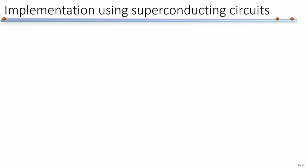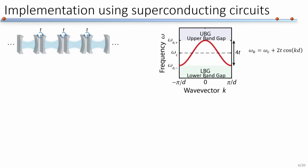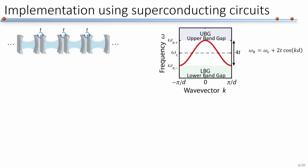We implement these ideas with superconducting circuits. We choose to implement our waveguide with a 1D coupled cavity array model with nearest-neighbor coupling. This tight-binding model has a cosine-shaped dispersion with two band gaps — the lower and upper band gaps. To implement this with superconducting circuits, we use a capacitively coupled LC resonator array. On top of that, we couple our transmon qubits onto the sites.